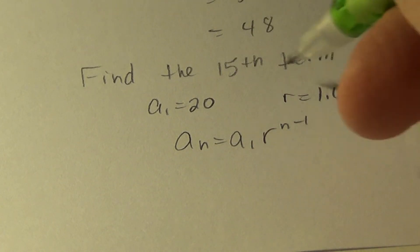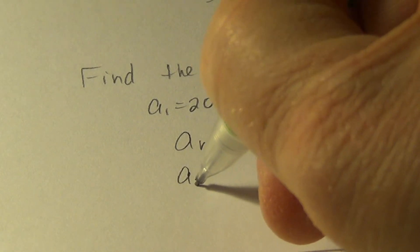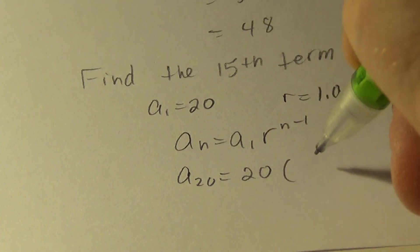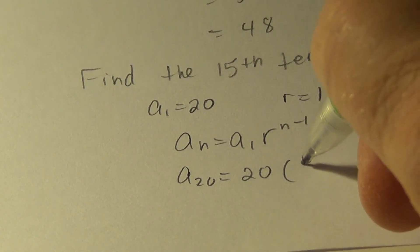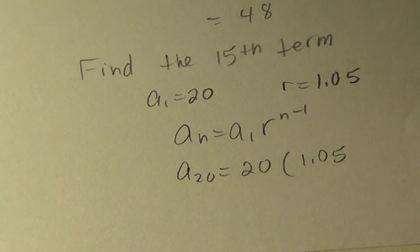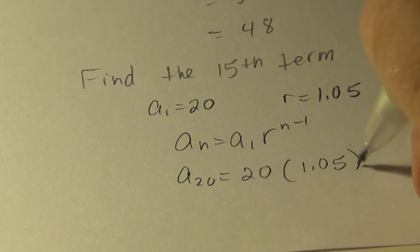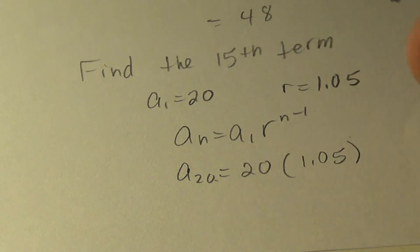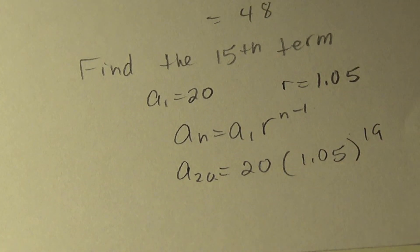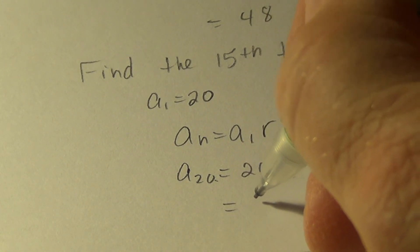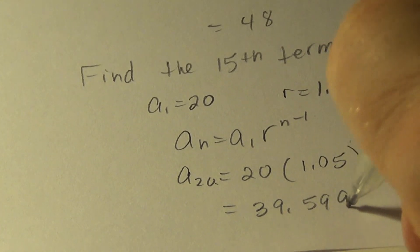So I'm looking for the twentieth term. Then twenty is the first term. The common ratio is 1.05, and I'm raising that to the n minus one. N is twenty, so the nineteenth. So when I put that in the calculator and plug it through, I get thirty-nine point five nine nine.